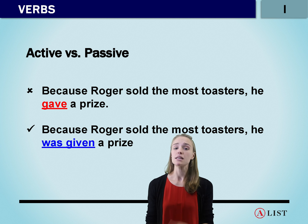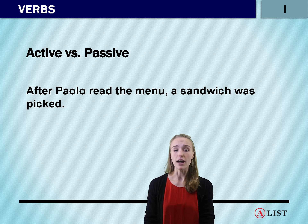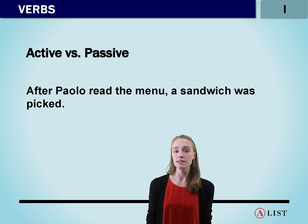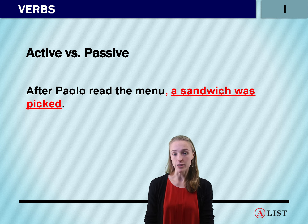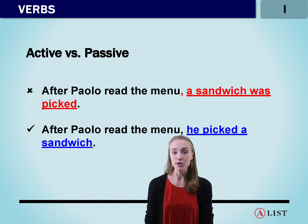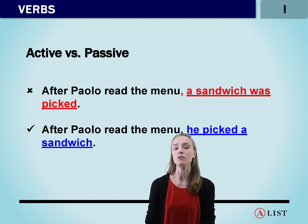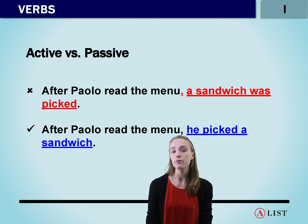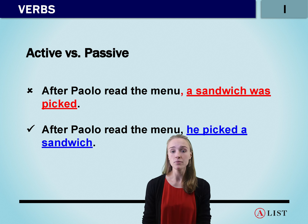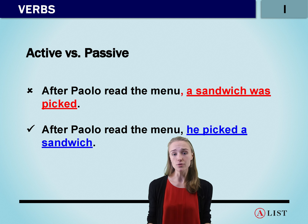In our next example, we can see when using the passive can be helpful versus when it can be slightly harmful. After Paolo read the menu, a sandwich was picked.' That's passive, and the problem is that it's a little bit too vague — we don't know who is doing the action of picking the sandwich. What we'd like to do instead is make this a more active sentence: 'After Paolo read the menu, he picked a sandwich.' Sometimes on the test, you will see an unnecessarily passive sentence that is very long, like 'After Paolo read the menu, a sandwich was picked by him.' Although we know who's doing that action, it is way too long and definitely wrong. We want to make it active: 'He picked a sandwich.'